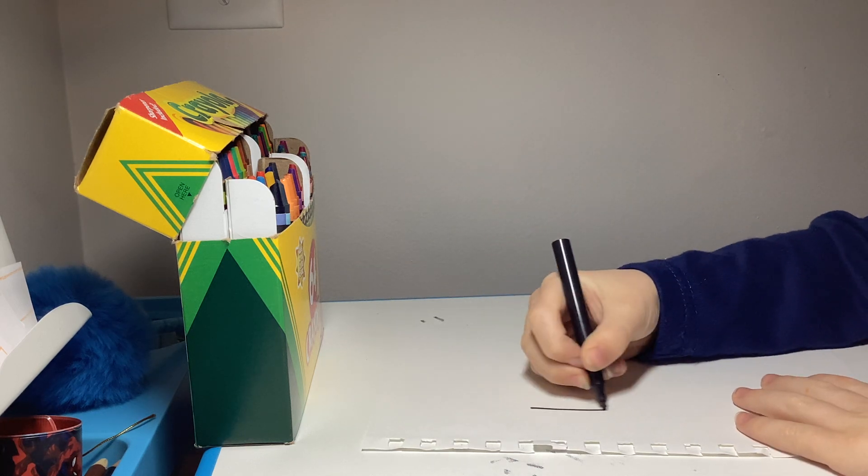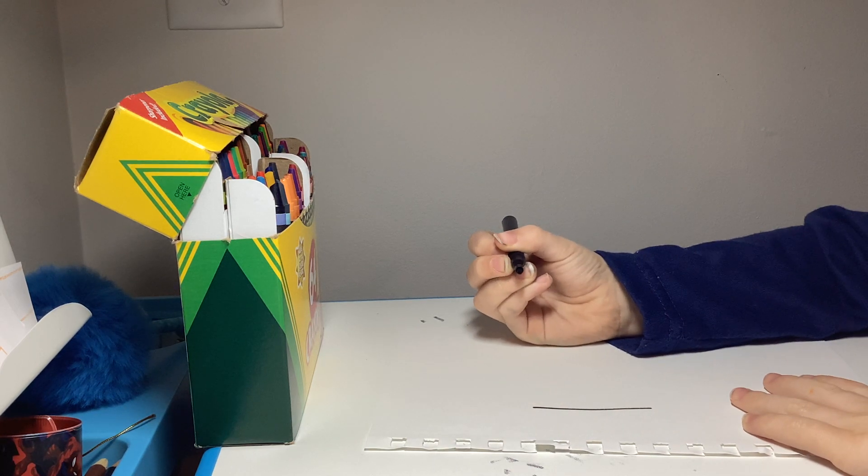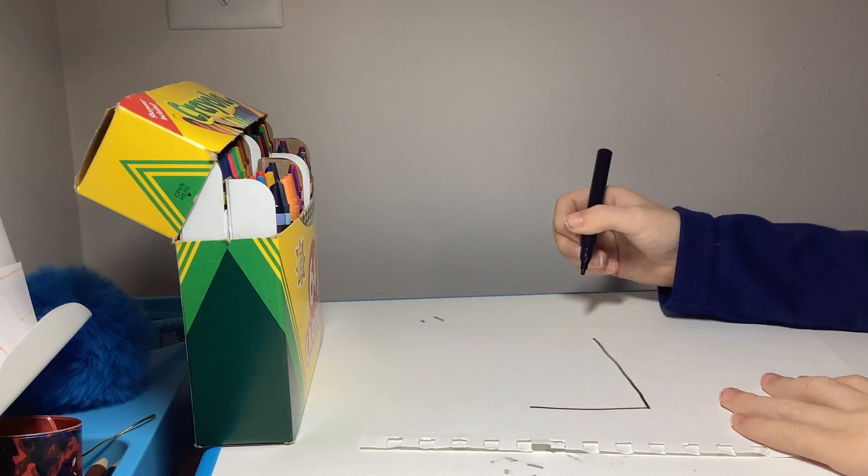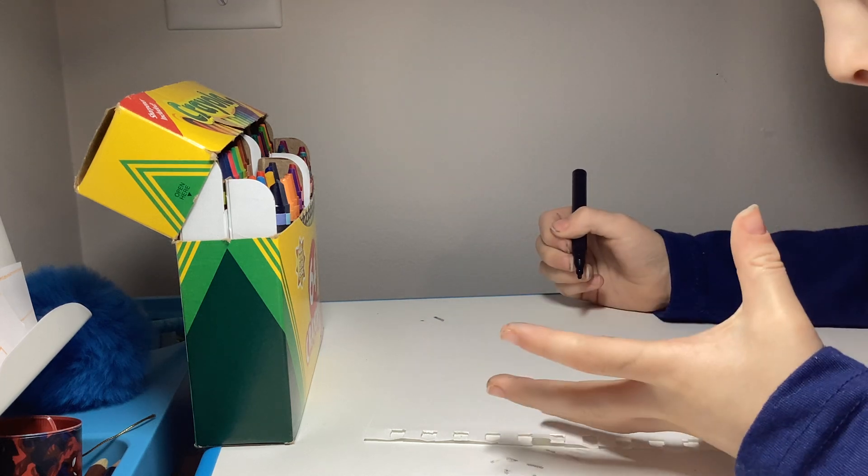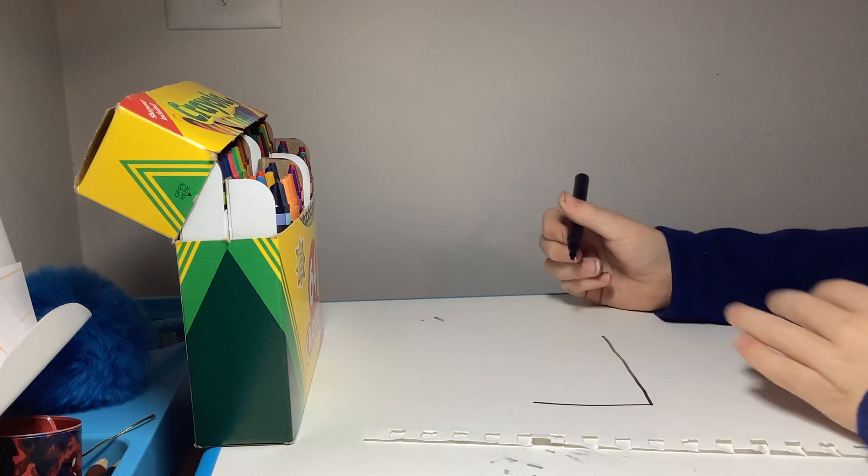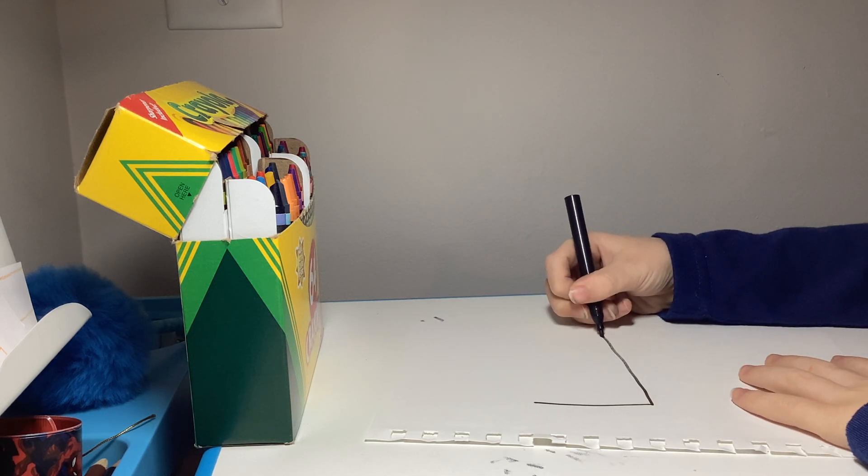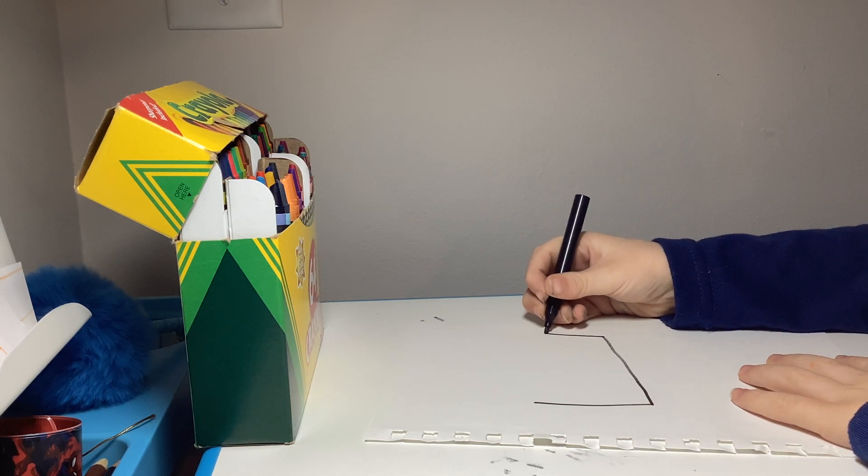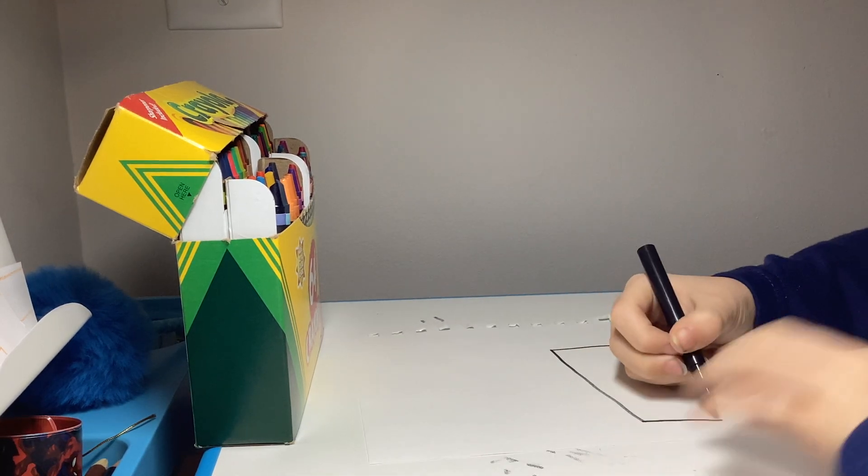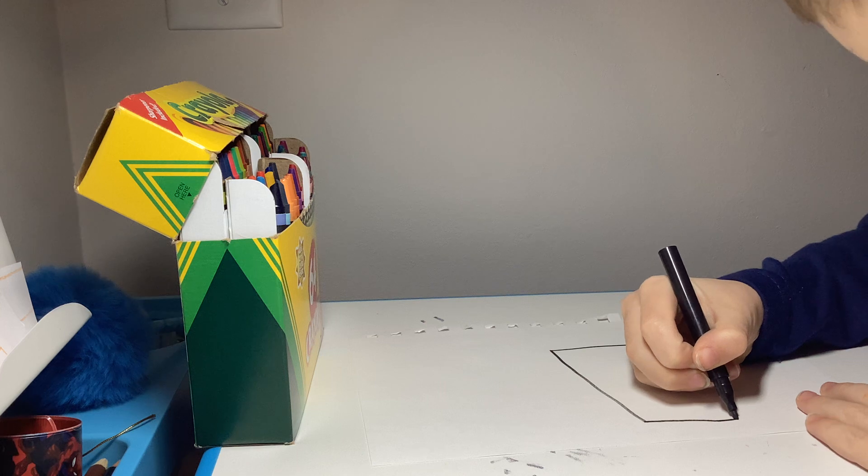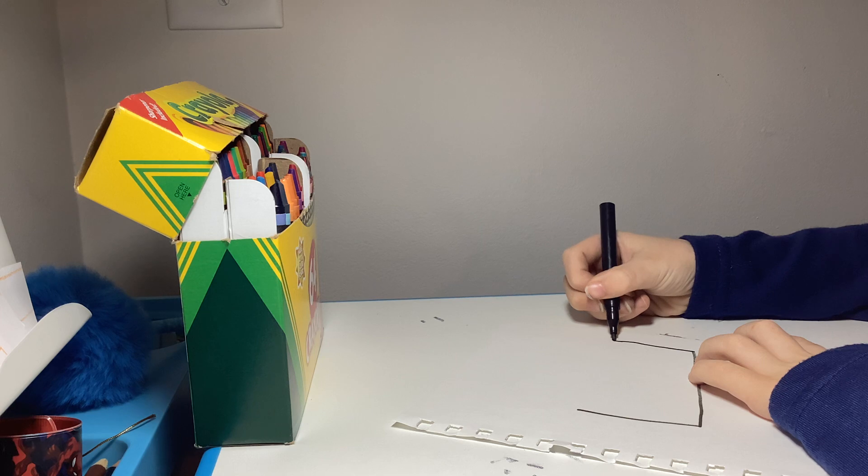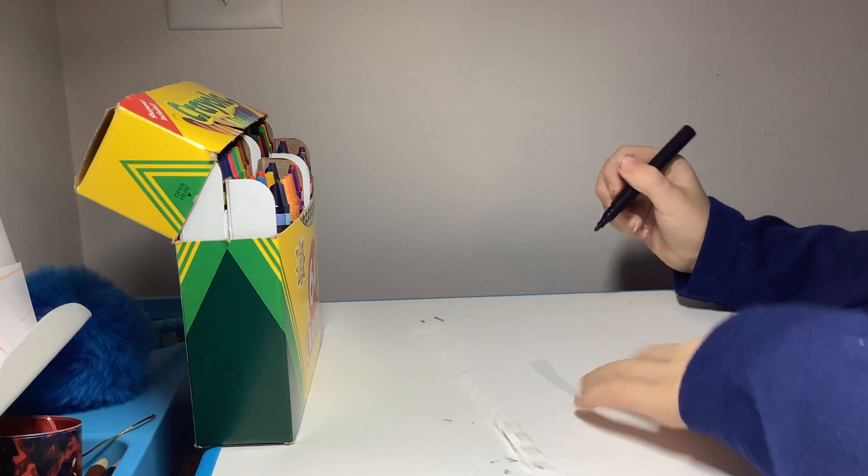So first we're going to start a big line. Then we're going to draw a longer line right at the bottom, between where our house is going to be. Then we're going to draw a line sliding up, not all the way to that one, but then we're going to connect to that one. And there you go.